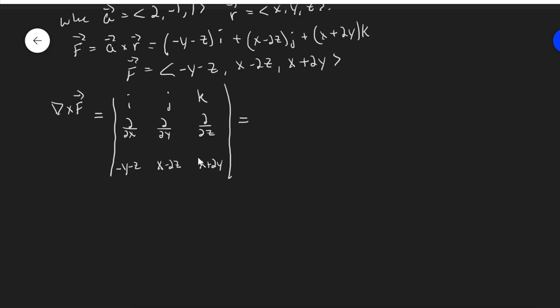So in the i direction, I'll have partial with respect to y of x plus 2y. And so that's just 2, so this will be 2, minus partial with respect to z of x minus 2z. That's negative 2, so that's plus 2 in the i direction. I'm going to write minus here. Remember, when we do determinant, we get a minus for this one. So j, partial with respect to x of x plus 2y, that's 1. And then partial with respect to z of y minus z, that's negative 1, so this will be plus 1 in the j direction. So minus 2 in the j direction.